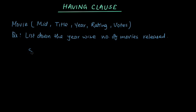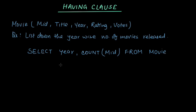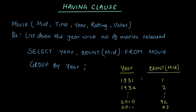So what will we write? We will write SELECT year, COUNT(mid) FROM Movie GROUP BY year. So what will be the output? The output would be something like this: the year and the count of mid, and then it will list the number of movies released in a particular year.